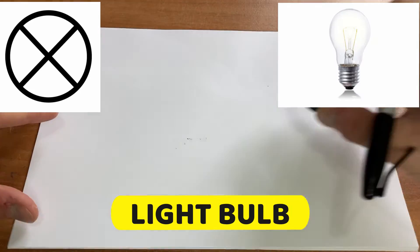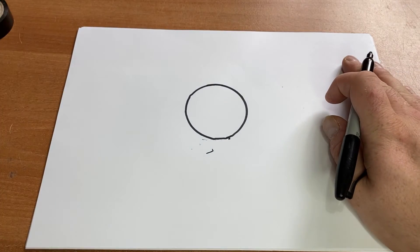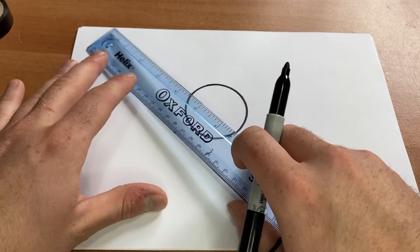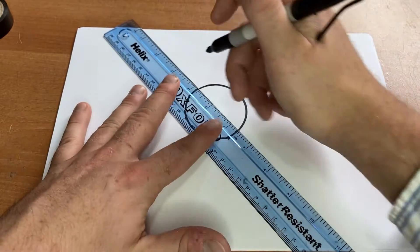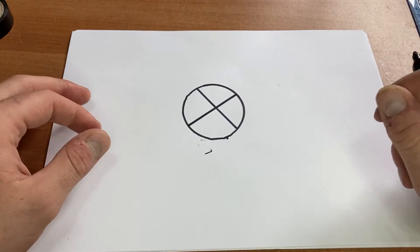Next up we've got the light bulb. Let's draw a circle like that. And then inside my circle I'm going to draw like an x or a multiplication sign. There you have it, the light bulb.